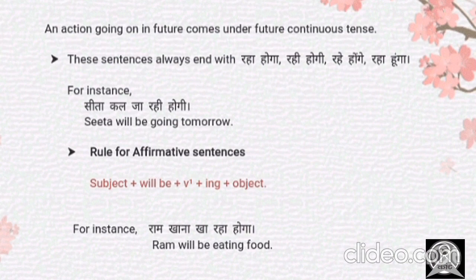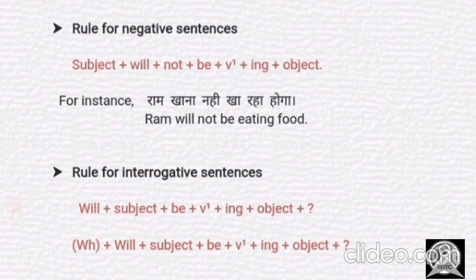She didn't go anywhere yesterday or the day before yesterday. Now let's have a look at the rule for affirmative sentences. We always put subject plus helping verb — or auxiliary 'will be' — plus verb's first form plus 'ing', plus object. For instance: 'Ram khana kha raha hoga' translates as 'Ram will be eating food'.